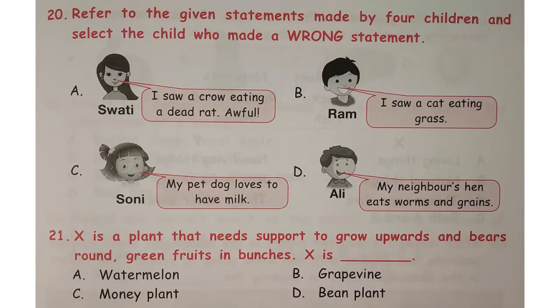Refer to the given statements made by four children and select the child who made a wrong statement. The correct answer is option B because a cat cannot eat grass.